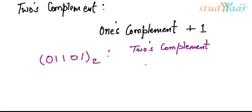What is my 1's complement? 1's complement is 1, 0, 0, 1, 0. And to this I have to add 1. So I'll add 1 to this.